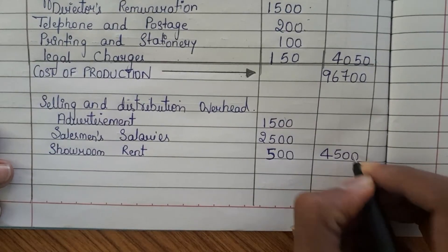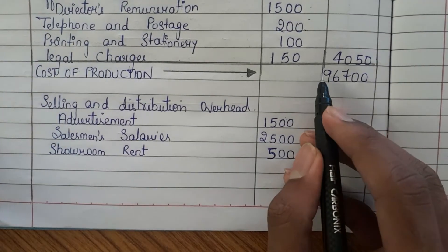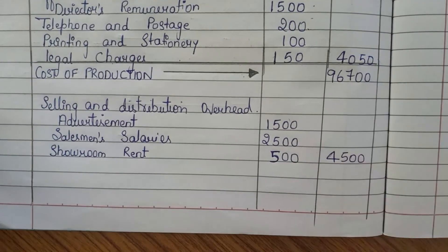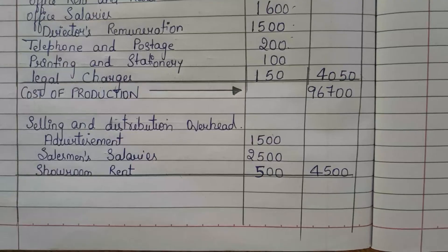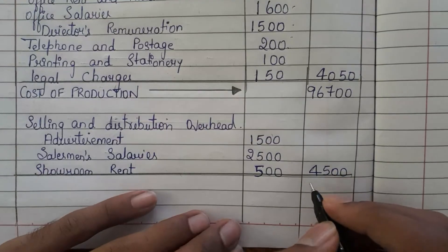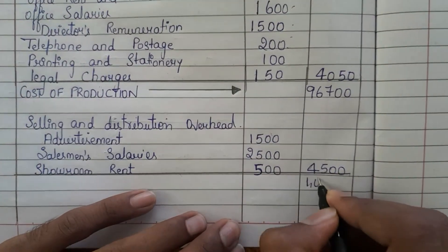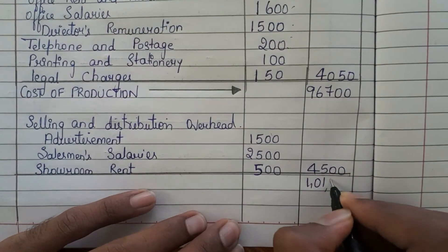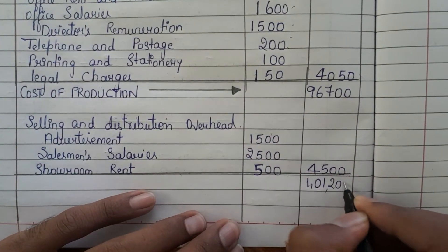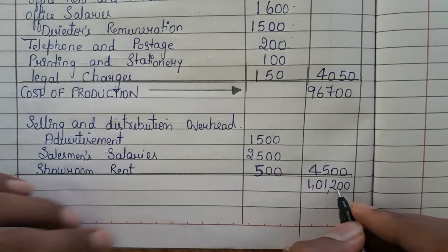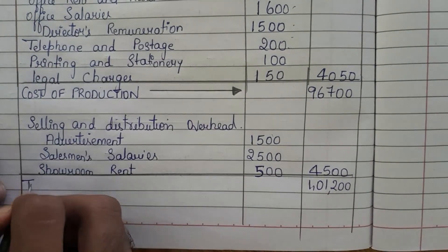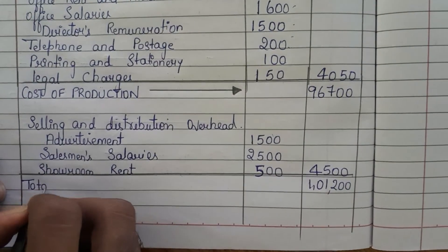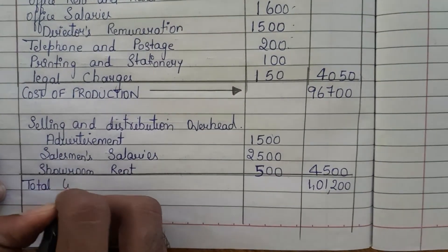Now add 4,500 and 96,700. You will get 1,01,200. What is this? This is nothing but the total cost.